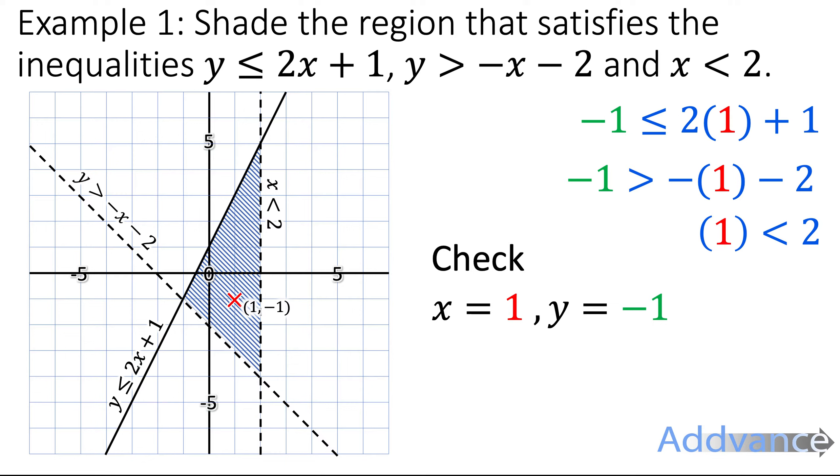And if you do work this out, it does make sense. For example, the top one: -1 is less than or equal to 2 times 1 plus 1. So -1 is less than 3. That makes sense. It seems that our inequalities are matching our coordinates. So if you've got a coordinate inside your region that matches all the inequalities, it means you're probably right.